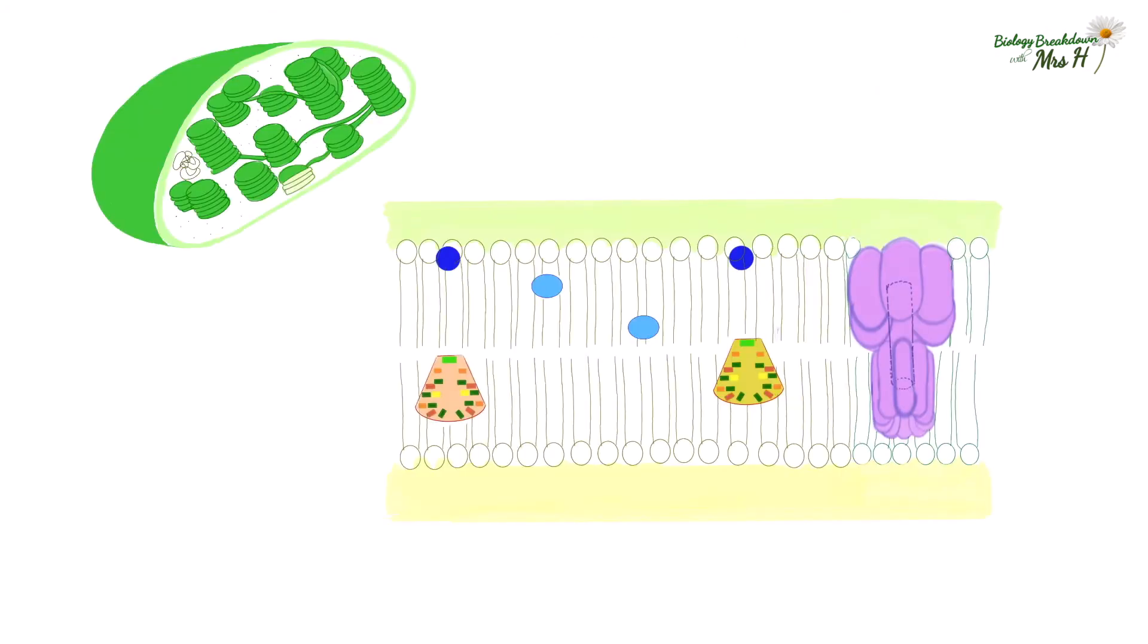We're going to focus on the light dependent stage so need to look at the thylakoid membrane more closely. It is a phospholipid bilayer. This is the outside of the thylakoid so the fluid on the outside is called the stroma and this is the inside of the thylakoid, the thylakoid space.